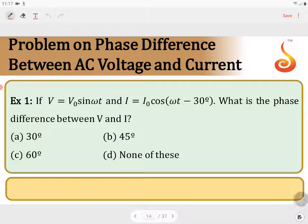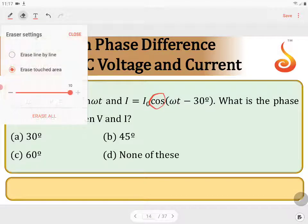So to get the exact phase difference directly from the equations, we have to convert this cos into sine form because voltage is given in the sine form.